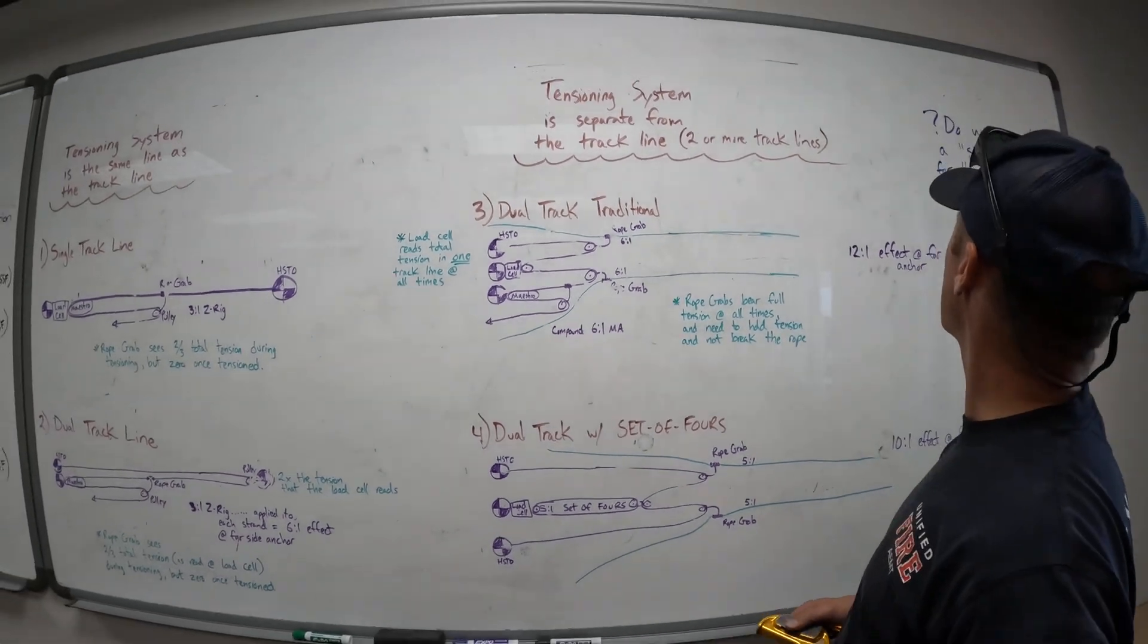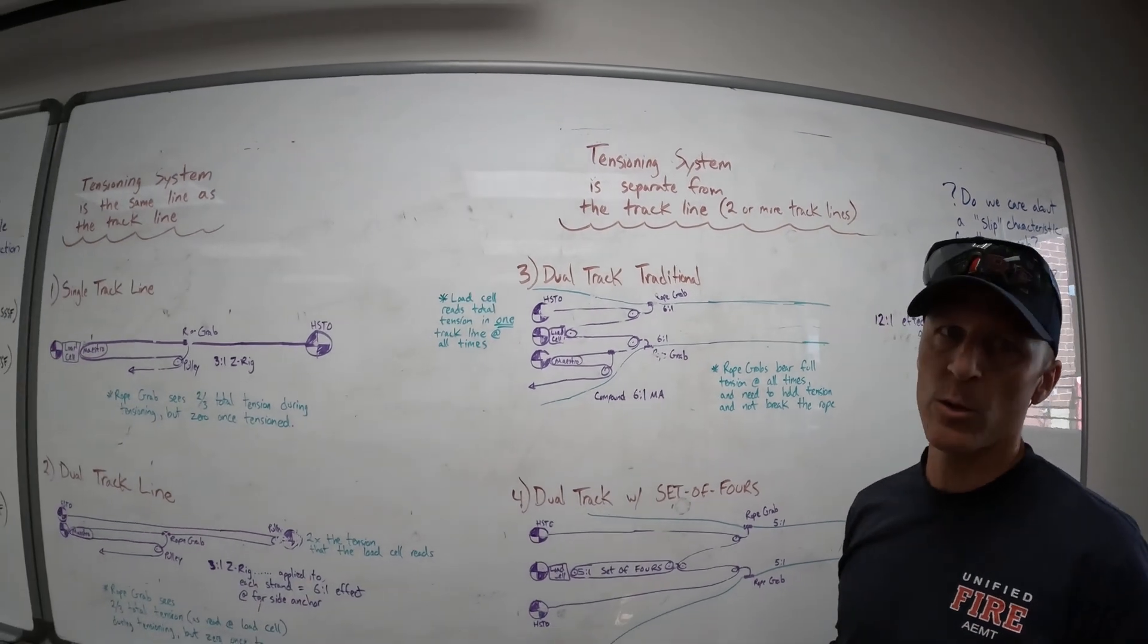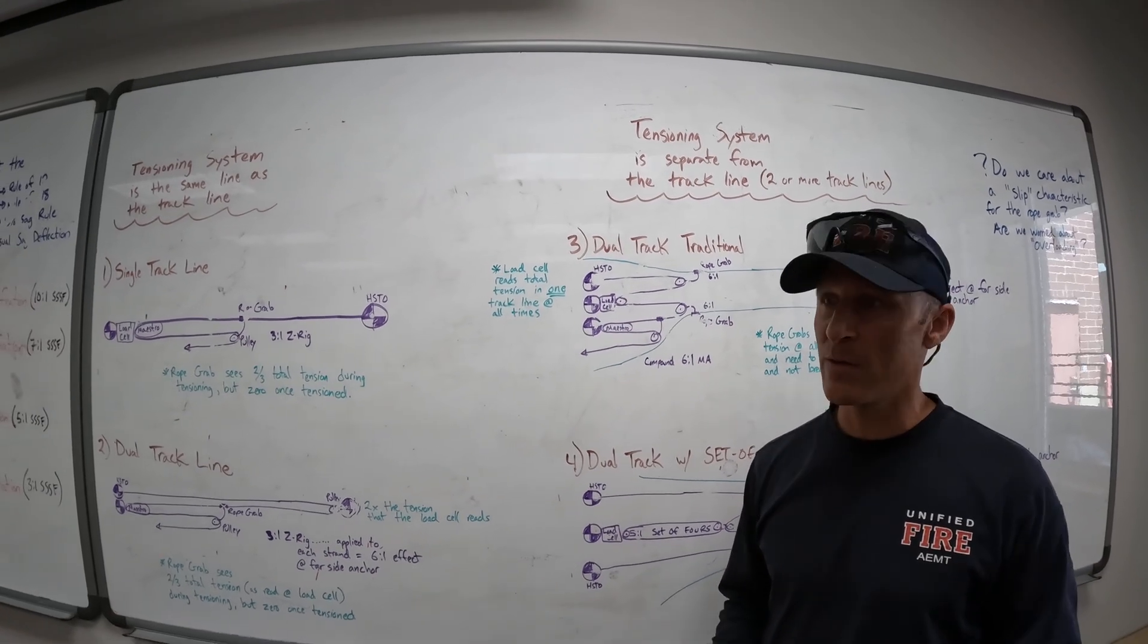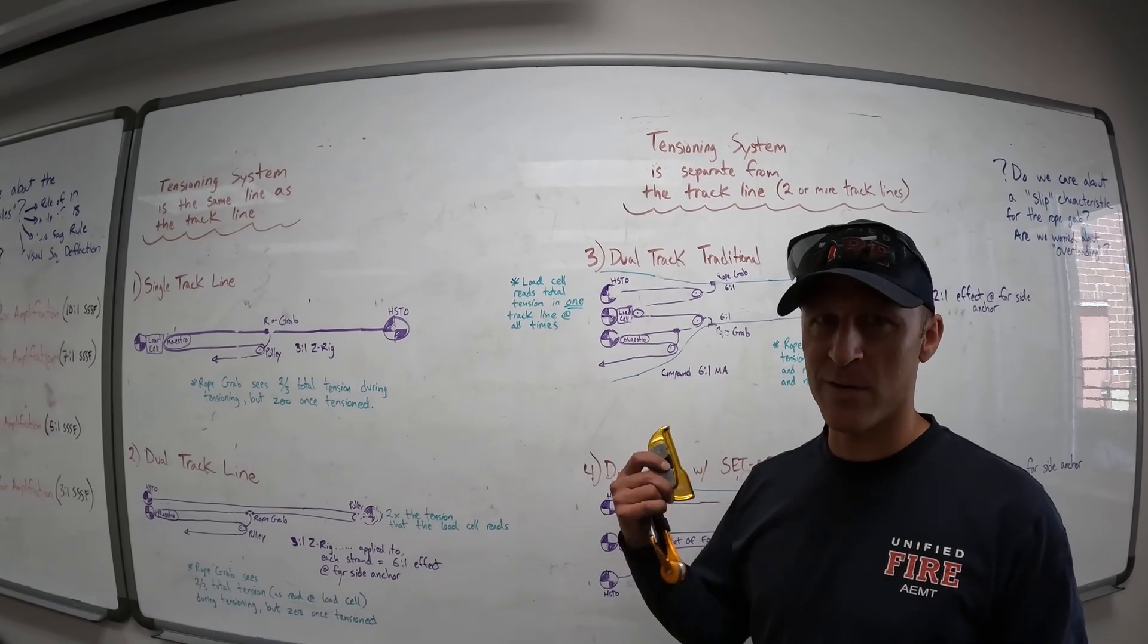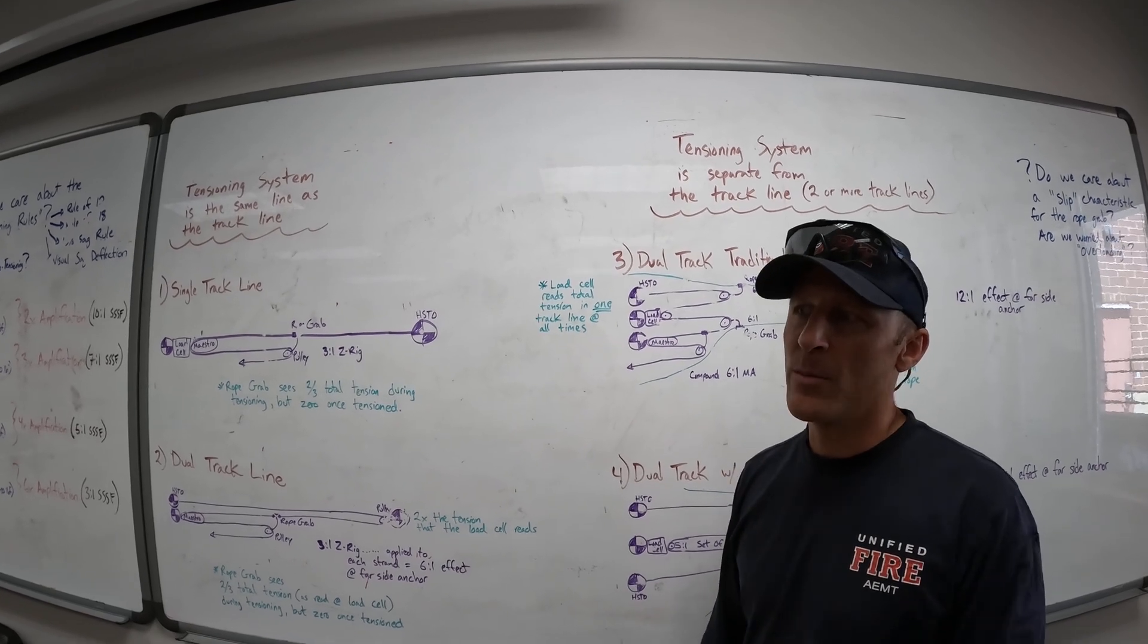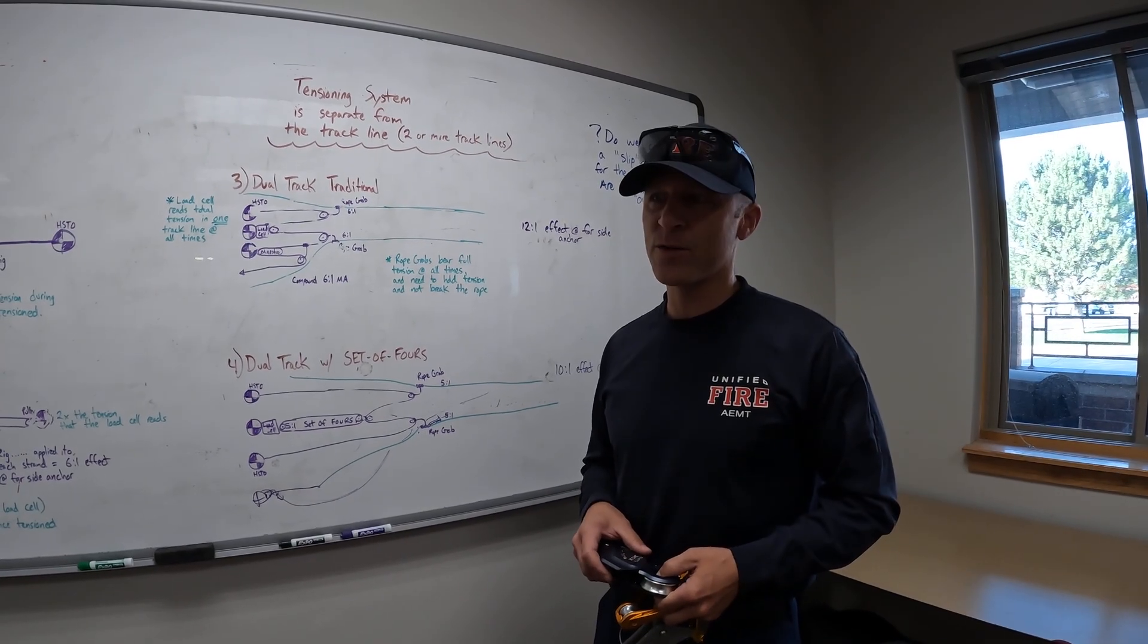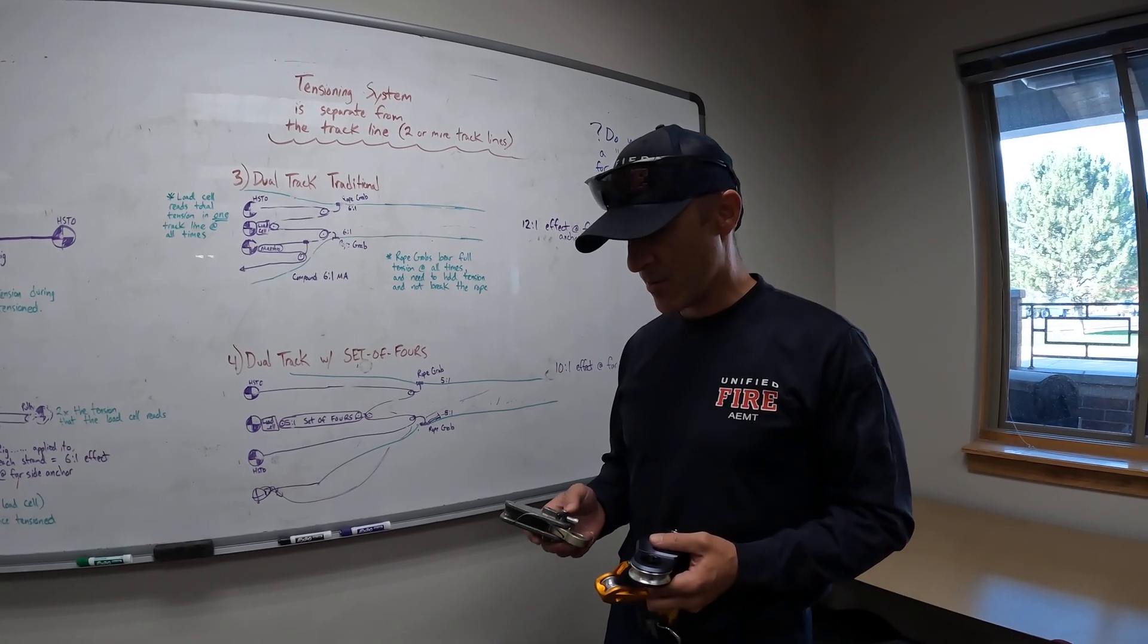That wraps up the configurations and our options. Do we care about a slip characteristic for the rope grab and are we worried about overloading? Well, if you don't know what you're doing, yeah, you should be worried about overloading. But if you don't know what you're doing you shouldn't do high lines, especially if you don't have a load cell. If you don't have a load cell, you're really hanging it out there. It's tough to keep track of everything you're doing. Things you can do: double up your ropes or have more than one track line, minimize the load, try to keep one person as the load sometimes that's unavoidable, and get a load cell.